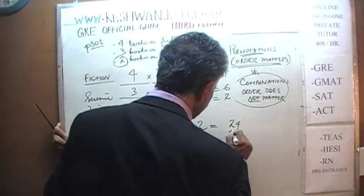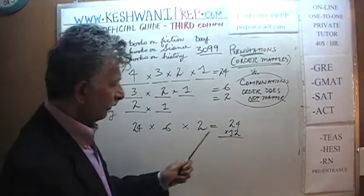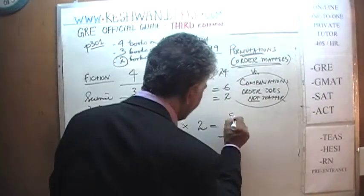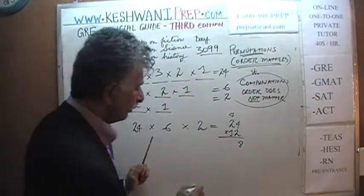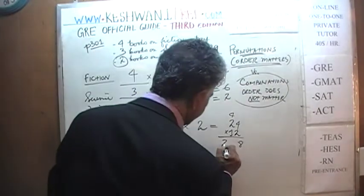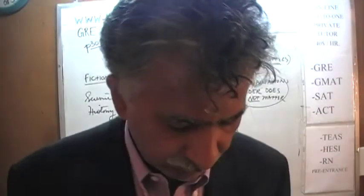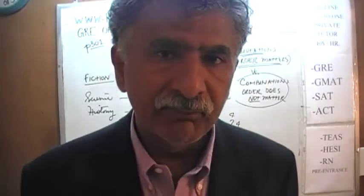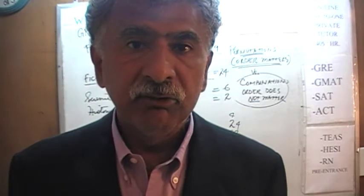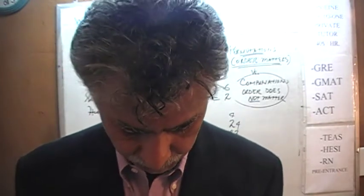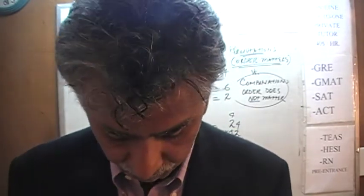Twenty-four times twelve. Twelve times four is forty-eight — carry four — and twelve times two is twenty-four, plus four is twenty-eight. The answer is there are two hundred and eighty-eight different ways that these books can be placed on the shelf, for all nine books.